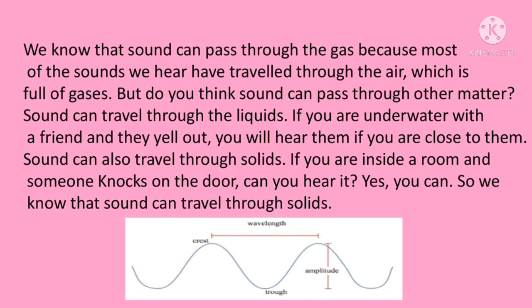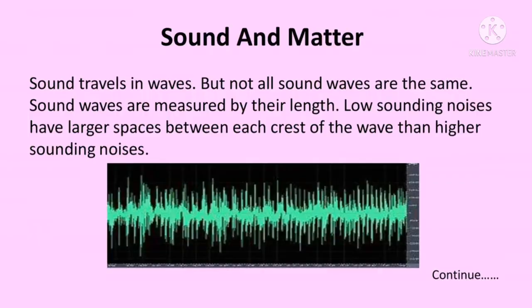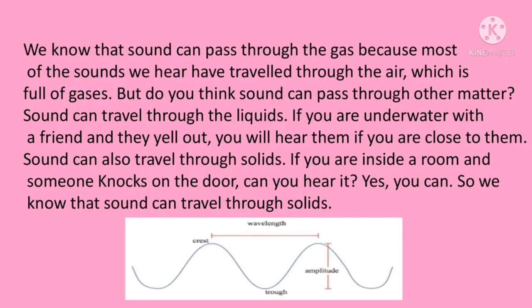How do we hear sound? Sound waves enter the outer ear and travel through a narrow passage called the ear canal, which leads to the eardrum. The eardrum vibrates from the incoming sound waves and sends these vibrations to three tiny bones in the middle ear. These bones amplify the vibrations and send them to the snail-shaped, fluid-filled structure in the inner ear. Once the vibrations cause the fluid inside to ripple, the traveling wave moves along the basilar membrane.